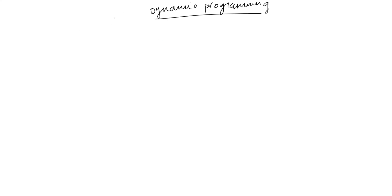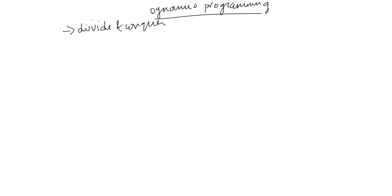This video is about dynamic programming. Dynamic programming is very similar to divide and conquer. In divide and conquer, we split the problem, then we solve the atomic subproblem, we merge the small subproblems, and then we see the final solution. We follow the same approach in dynamic programming.